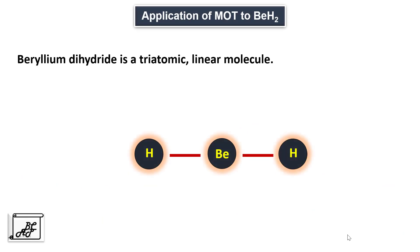Let's first apply molecular orbital theory to the beryllium dihydride molecule. Beryllium dihydride is a triatomic linear molecule in which beryllium is the central atom and the two hydrogen atoms are the peripheral atoms. The next step is to consider the electronic configuration of the atoms. Beryllium, atomic number 4, has electronic configuration 1s², 2s², 2p⁰. Hydrogen, atomic number 1, has electronic configuration 1s¹. The next step is the formation of group orbitals.